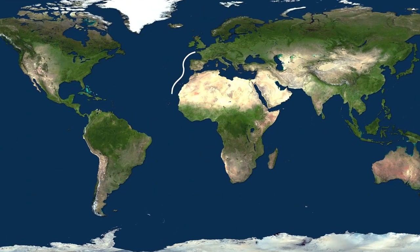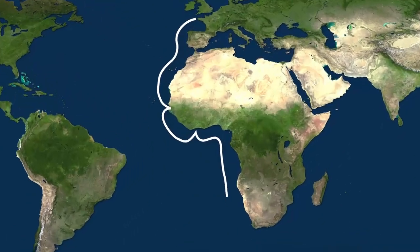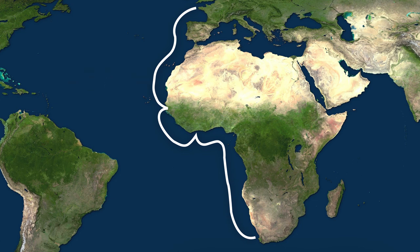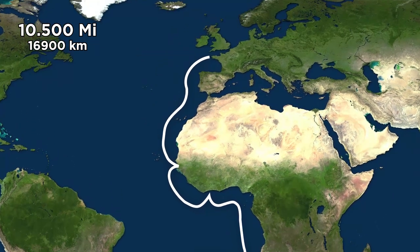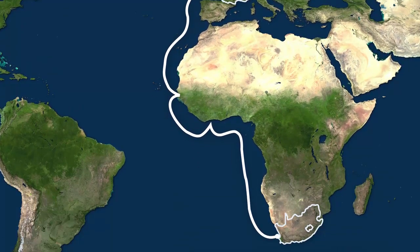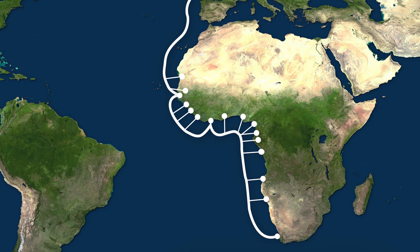The specific cable cut in the African internet incident was the African Coast to Europe cable, better known as the ACE cable. Commissioned in 2012, this cable stretches 10,500 miles from France to South Africa to provide internet connections to nearly all of western coastal Africa, including Mauritania,